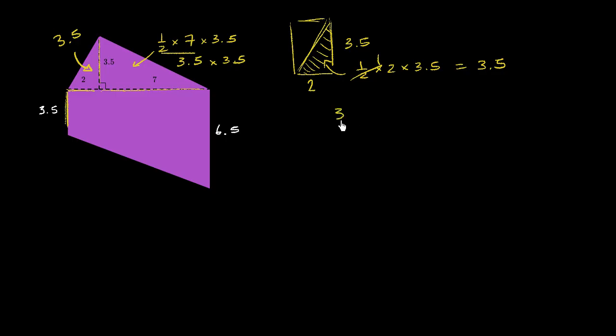So 3.5 times 3.5. 5 times 5 is 25. 3 times 5 is 15 plus 2 is 17. Move one place over to the left. 3 times 5 is 15. 3 times 3 is 9 plus 1 is 10. So that gets us to 5 plus 0 is 5, 7 plus 5 is 12, carry the 1. 1 plus 1 is 2, and we have a 1. We have two digits to the right of the decimal, so the area here is 12.25 square units.